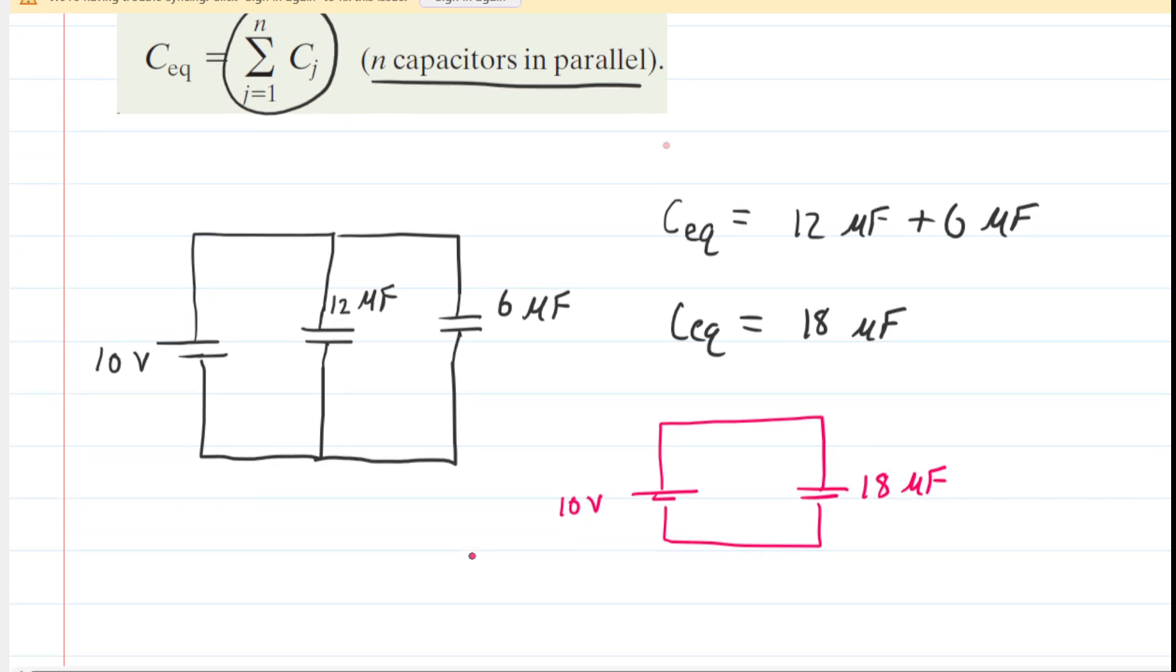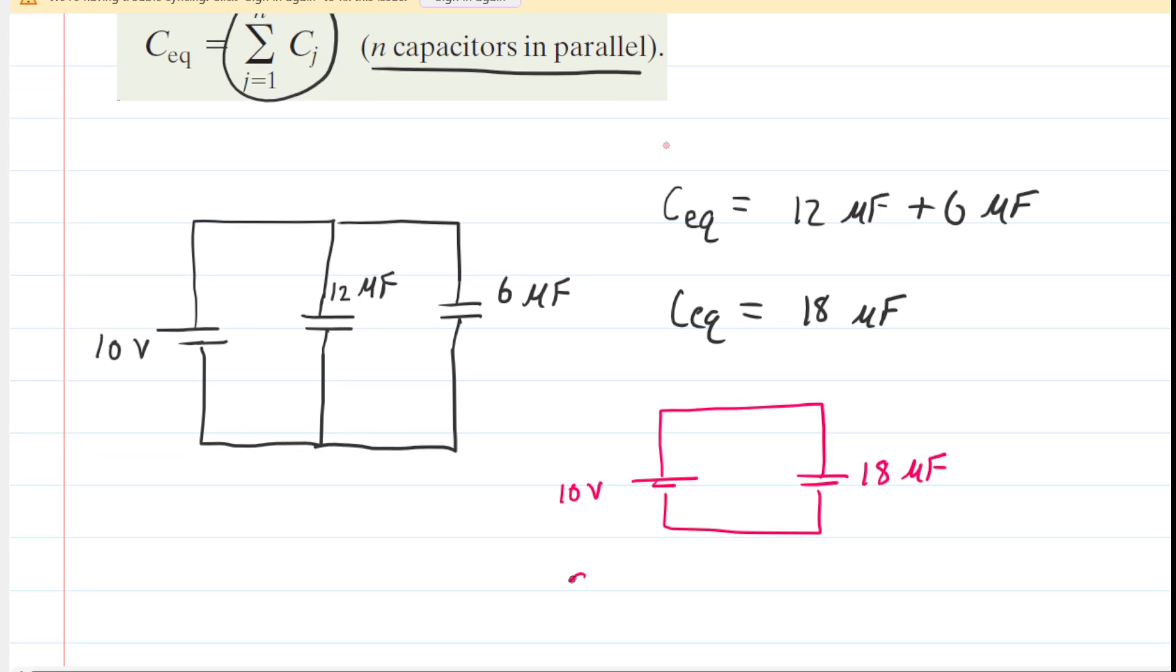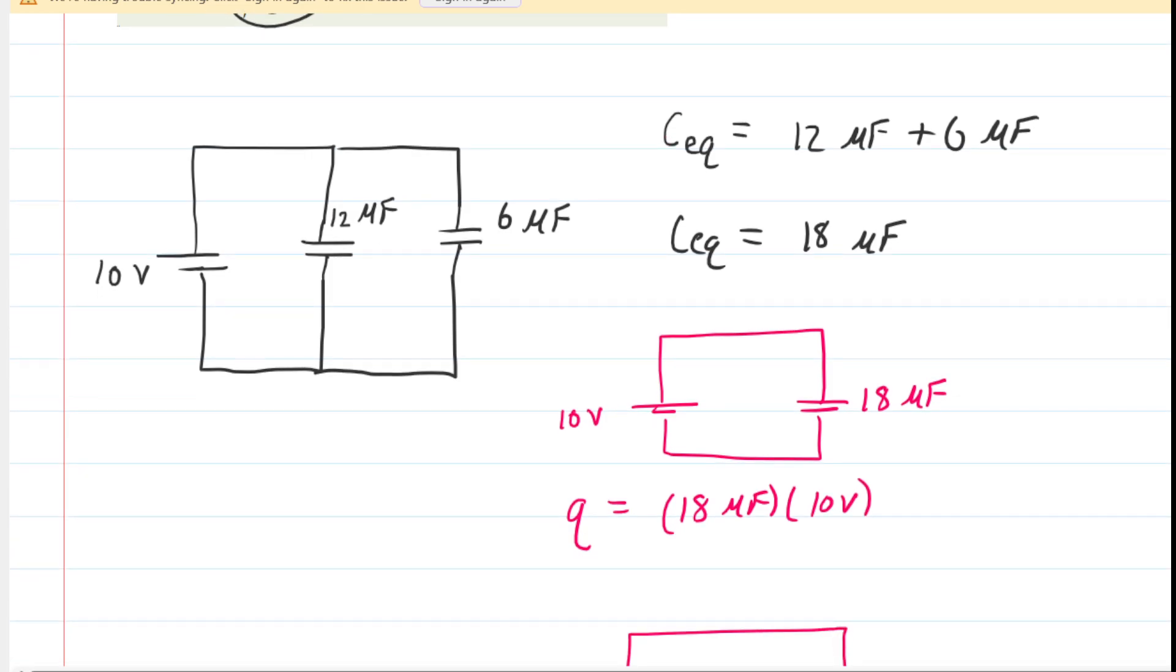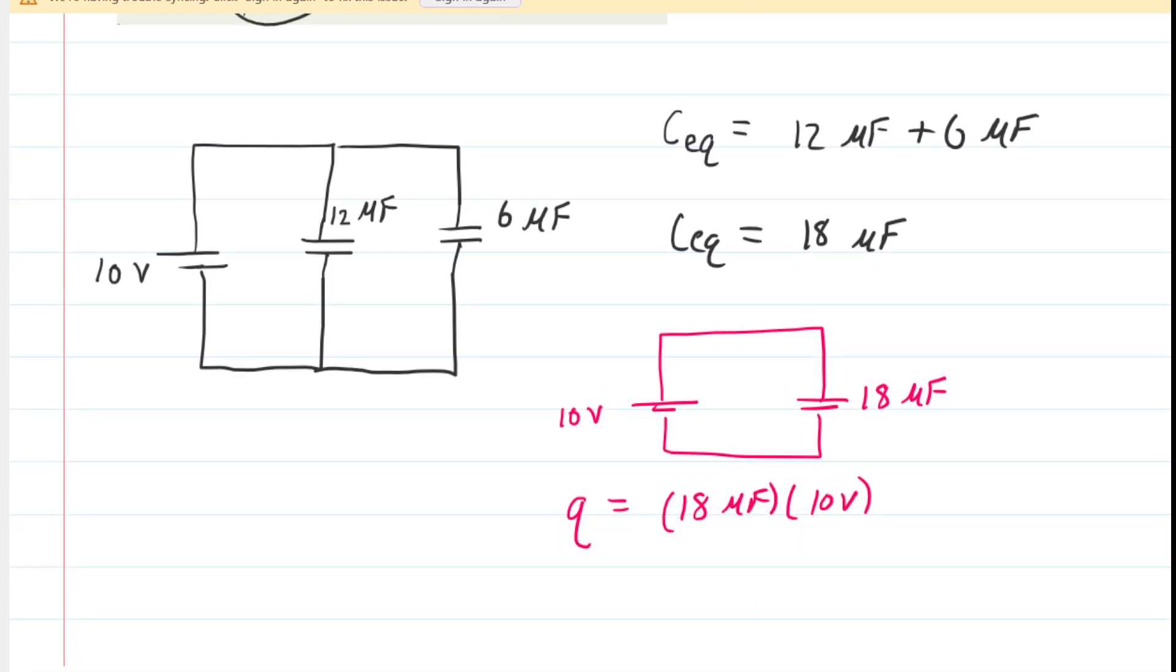We can calculate the total charge in the same manner that we used earlier. The total charge stored on our equivalent capacitor equals the new capacitance multiplied by the potential difference. Now the total amount of charge stored here is going to increase up to 180 microcoulombs.